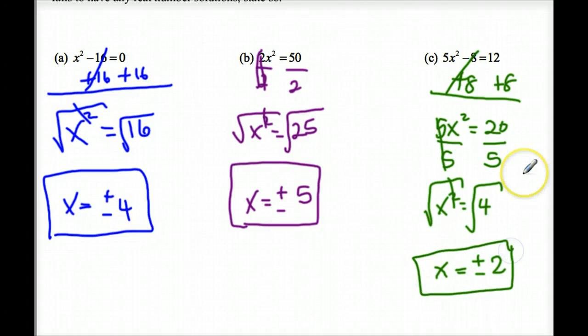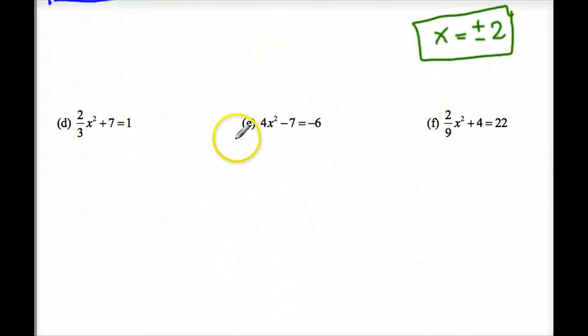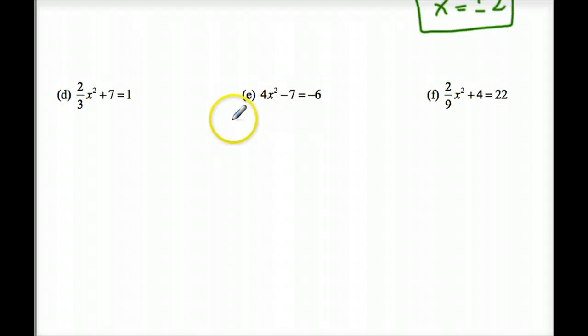Our key thing is to take our C term, get it over by itself, and then solve for X. Remember, you're always going to get two answers because they're quadratics.